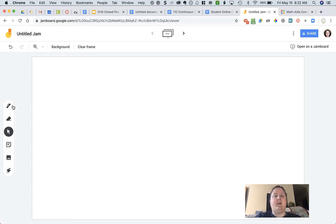Over on the left you can see that I have a pen tool, eraser tool, I can add sticky notes, I can add images, or I can use a laser like a laser pointer when I'm explaining things.